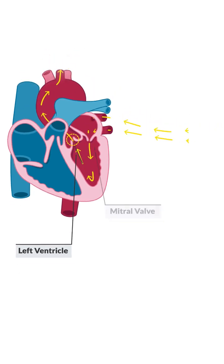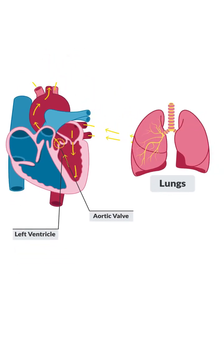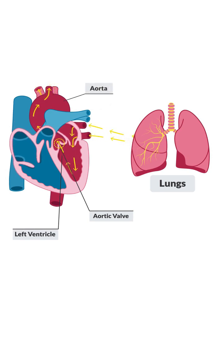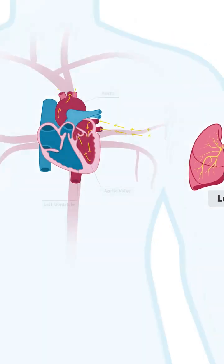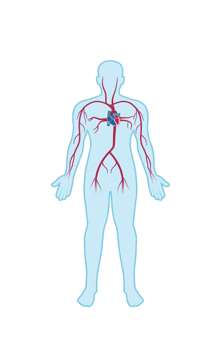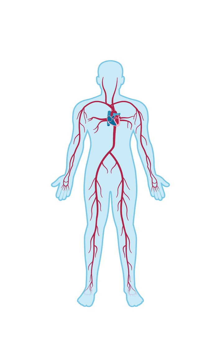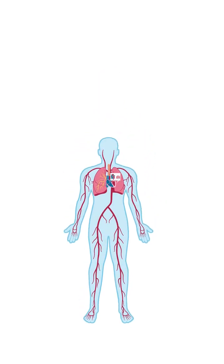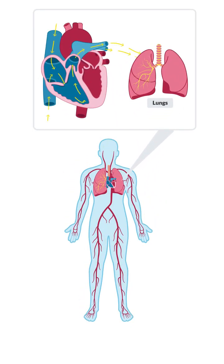The aorta branches into smaller arteries, arterioles, and then capillaries, delivering oxygen and nutrients to all the body's tissues and organs. After delivering oxygen, the now-deoxygenated blood collects in veins and makes its way back to the superior and inferior vena cava to begin the circulation cycle again.